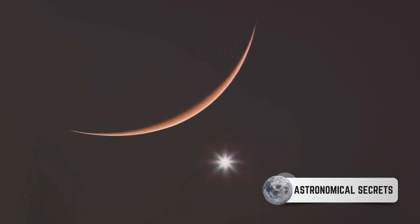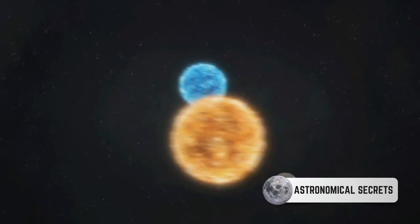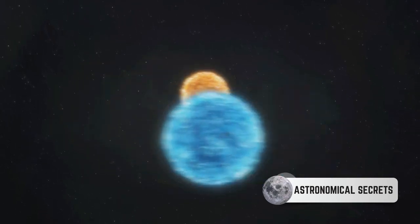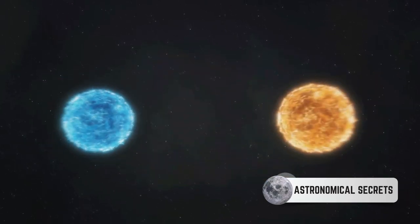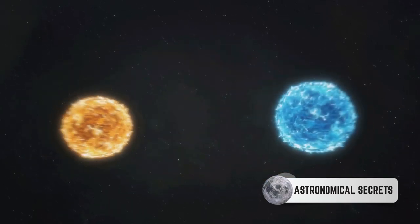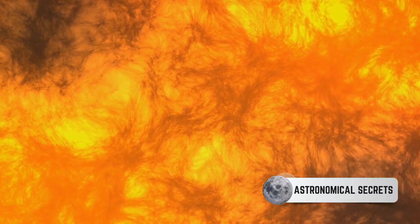Carbon stars are a type of red giant star, which are large, luminous stars in a late stage of stellar evolution. Now, every star, including our sun, produces carbon through a process called nuclear fusion. However, in carbon stars, this process is amplified, leading to an abundance of carbon atoms.